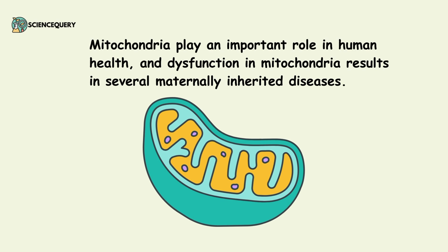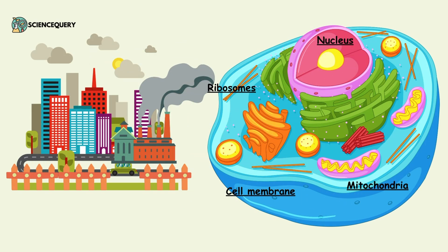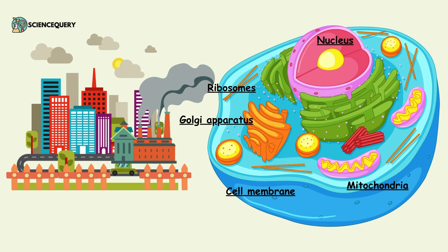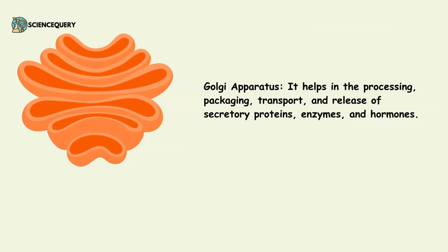The next important organelle of a eukaryotic cell is the ribosomes. They can be compared with the city factories — they help in the manufacturing of proteins, or protein synthesis. Another important organelle is the Golgi apparatus, which can be compared with the post office of a city. It helps in the processing, packaging, transport and release of secretory proteins, enzymes and hormones.